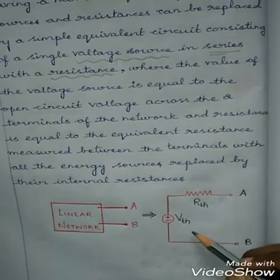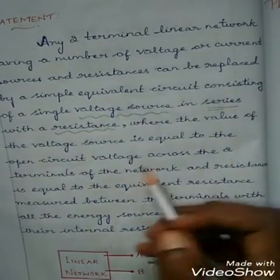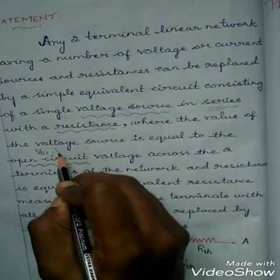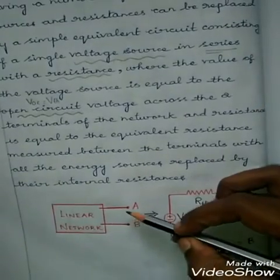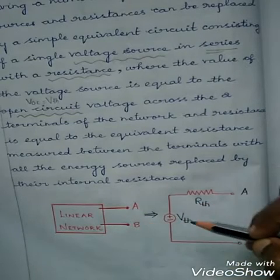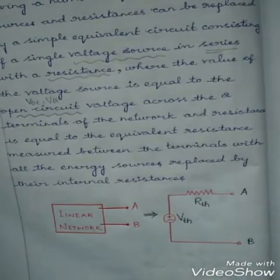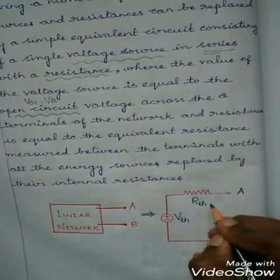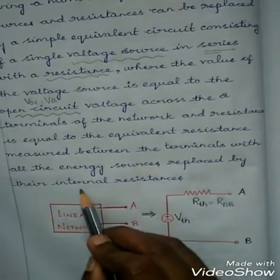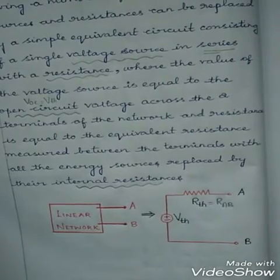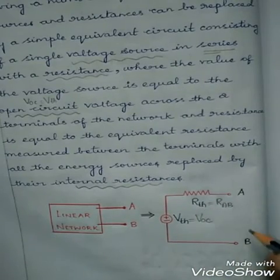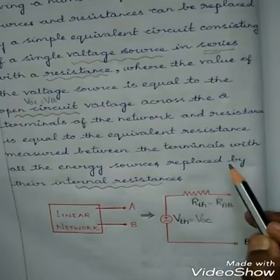What about Thevenin's voltage? Thevenin's voltage is calculated by means of open-circuiting — it is nothing but the open circuit voltage across the two terminals A and B of the network. Thevenin's resistance is nothing but the resistance across the terminals A and B while replacing all the energy sources by their internal resistances.